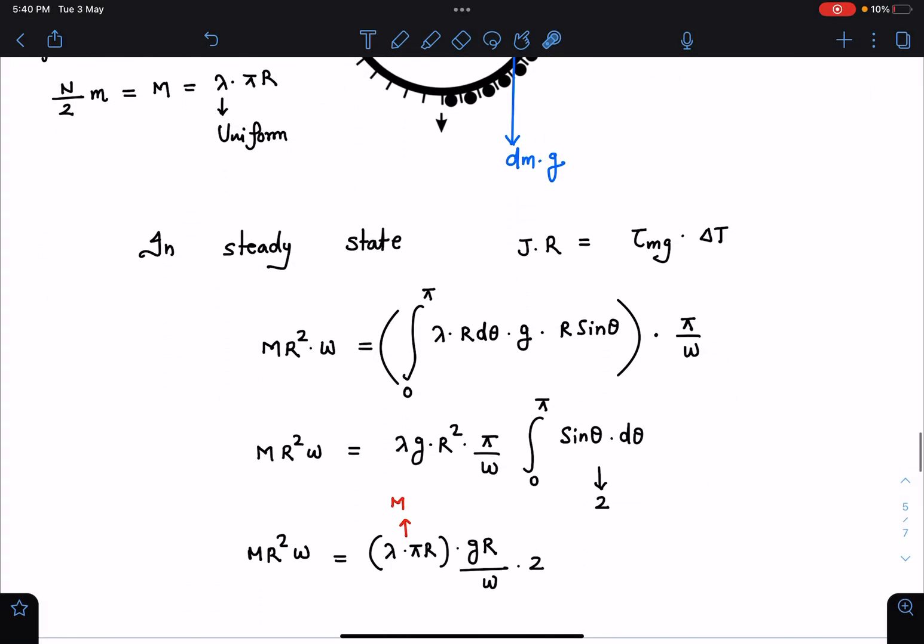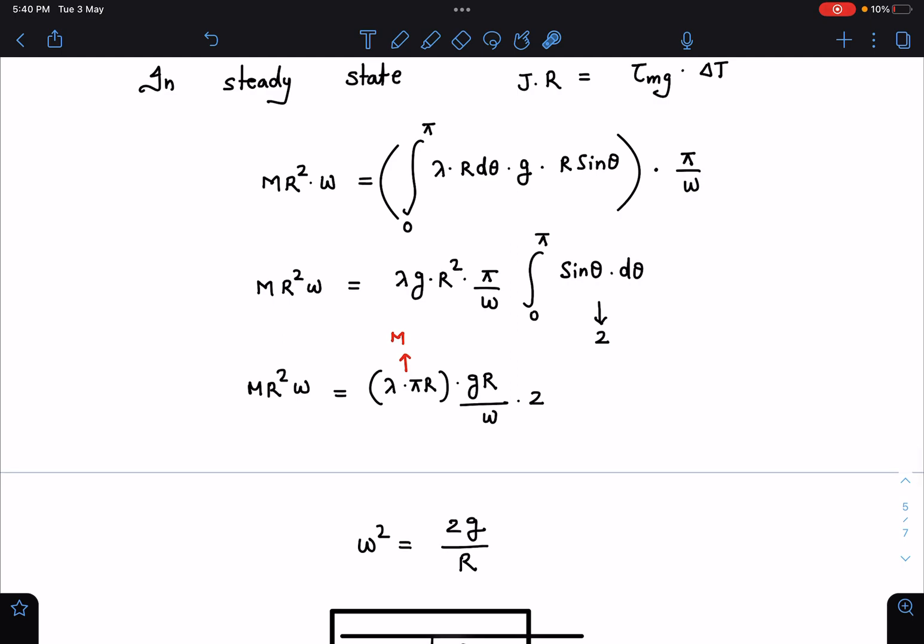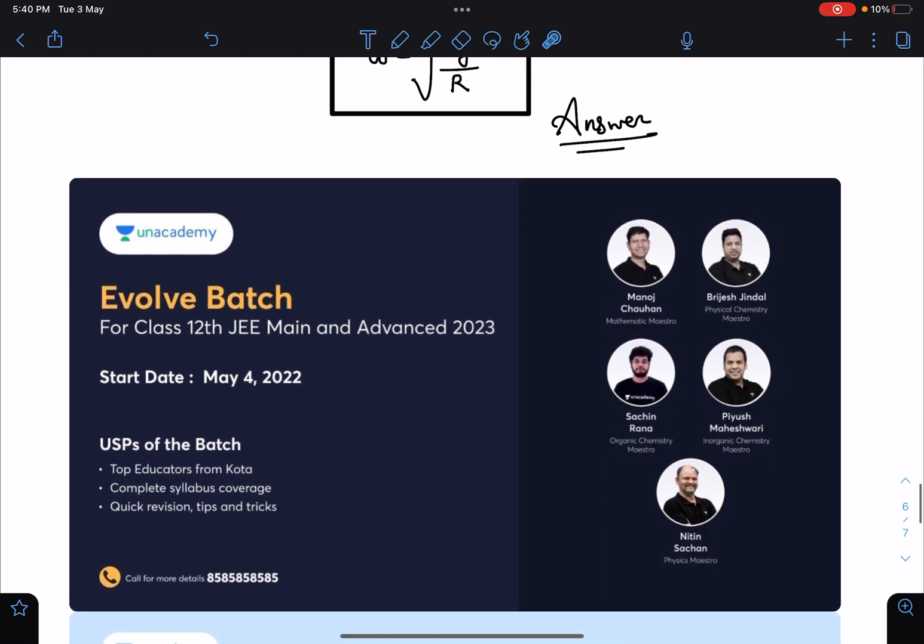Another important announcement is this Evolved batch for class 12 JEE Mains and Advanced 2023, and it is starting tomorrow. Tomorrow we will be having orientation session at 5:30 PM. And a very good team of Unacademy is going to handle this batch: Anand Chohan sir for maths, Preet Jindal sir for physical chemistry, Sachin Rana sir for organic, and Puri sir for inorganic chemistry. And I'll be handling the physics of this batch. So those who want to complete their syllabus of 12th class with us can join this batch, and we will be doing the revision in parallel for 11th topics also.